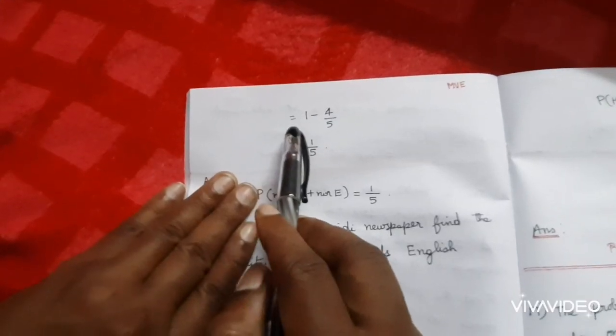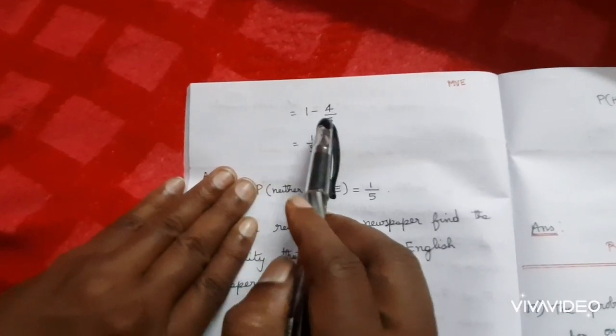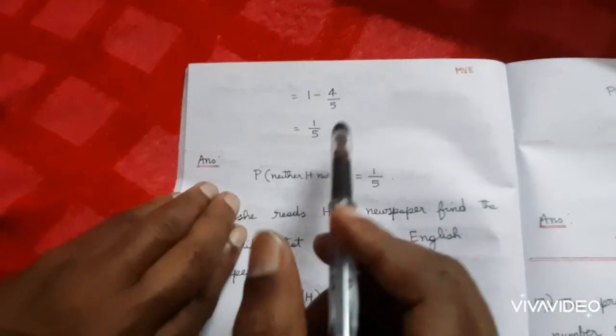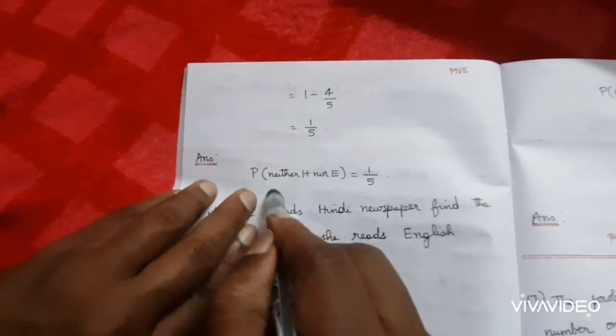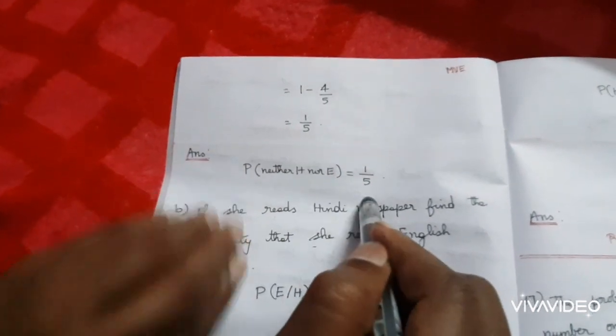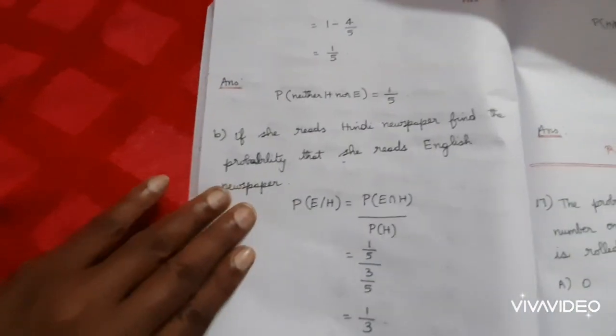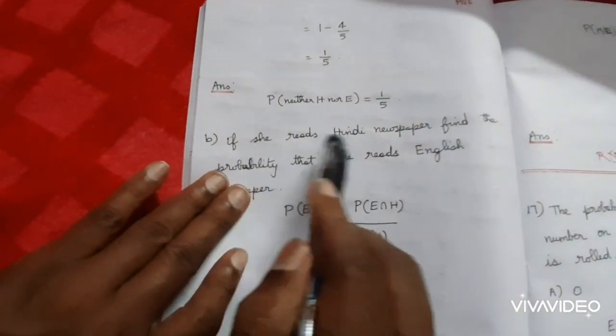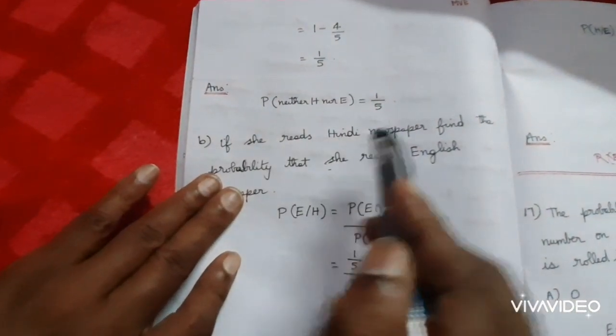Simplify: 1 minus 4/5, which equals 1/5. So P(neither H nor E) equals 1/5.